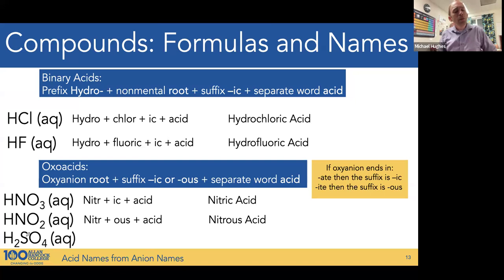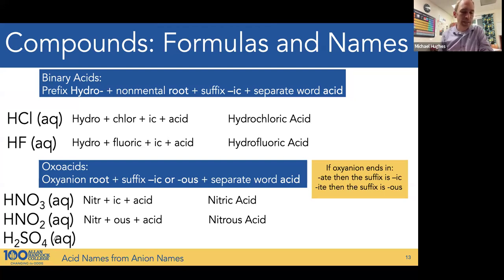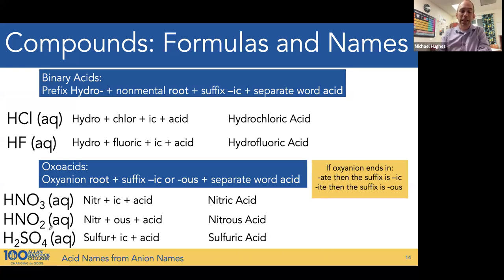Here we have sulfate, which is SO4 2−, an oxoanion ending in -ate. Because it's 2−, it will need two H+ to counter it, but we still have the cation H+ and the aqueous symbol — this is an acid with two protons to dissociate in solution. Sulfate with -ate becomes -ic, so this is sulfuric acid.